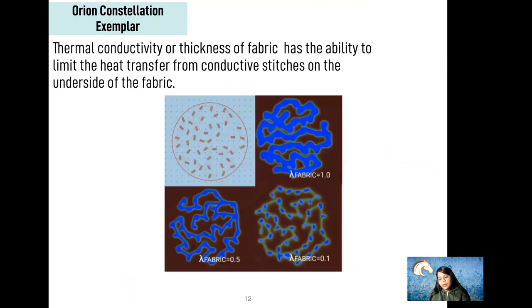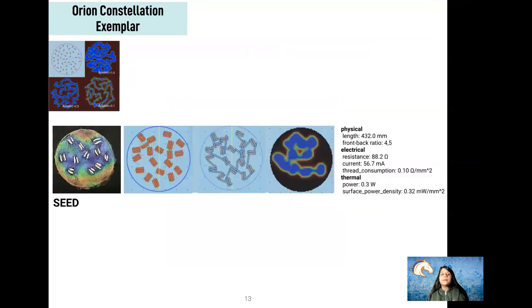In our experiments, we realized that the thermal conductivity or thickness of the fabric has the ability to limit heat transfer from embroidery stitches on the underside of the fabric. If we choose a stitch where there are more stitches on the underside compared to the top side, we can have more control over the color changes on the top. One example of such a stitch is the seed stitch, and even though the front to back ratio is not really high, it shows enough contrast in behavior to showcase the thermal conductivity.